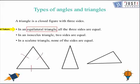Then we have isosceles triangle where two sides are of equal length. The third one is of different length. Then we have a scalene triangle where all the three sides are of different length. This is a scalene triangle.